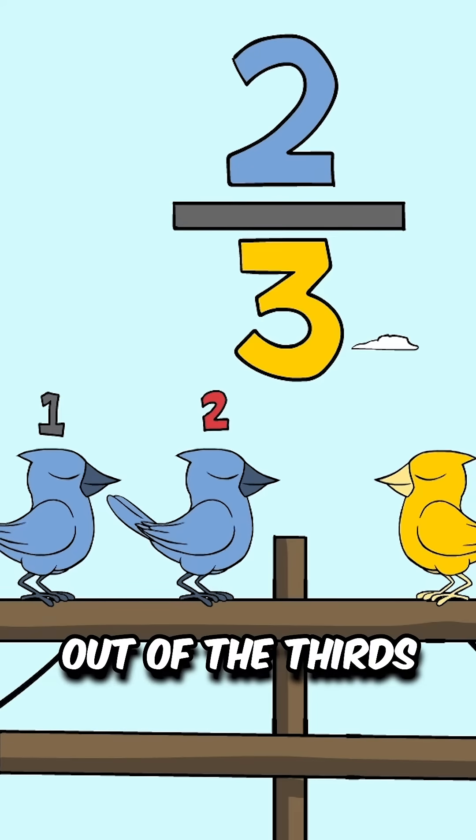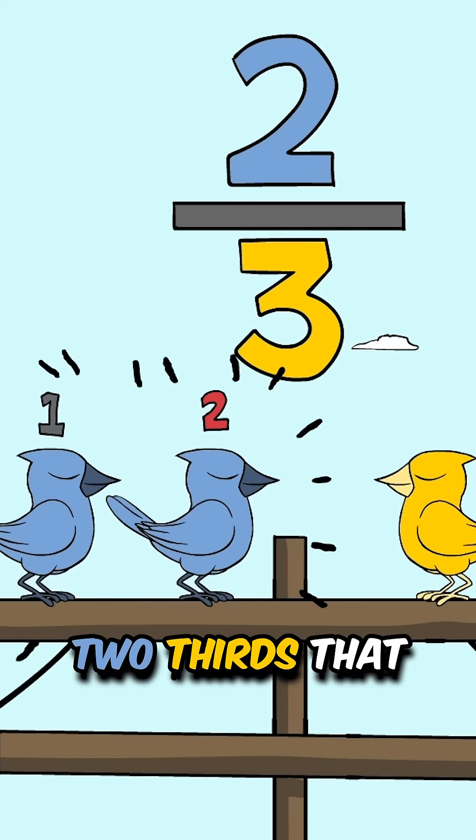The numerator two, out of the thirds, described the two-thirds that were bluebirds.